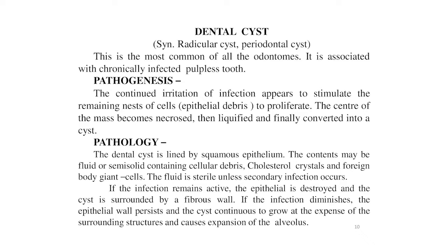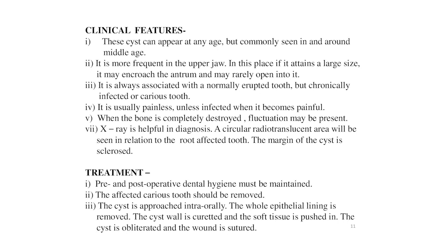Pathology of dental cyst: it is lined by squamous epithelium. Contents may be fluid or semi-solid containing cellular debris, cholesterol crystals, and foreign body giant cells. The fluid is sterile unless secondary infection occurs. If infection remains active, the epithelium is destroyed and the cyst is surrounded by a fibrous wall. If infection diminishes, the epithelium wall persists and the cyst continues to grow.